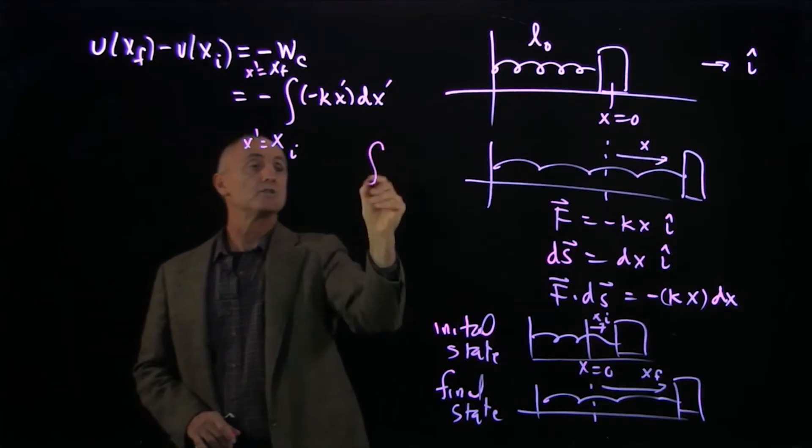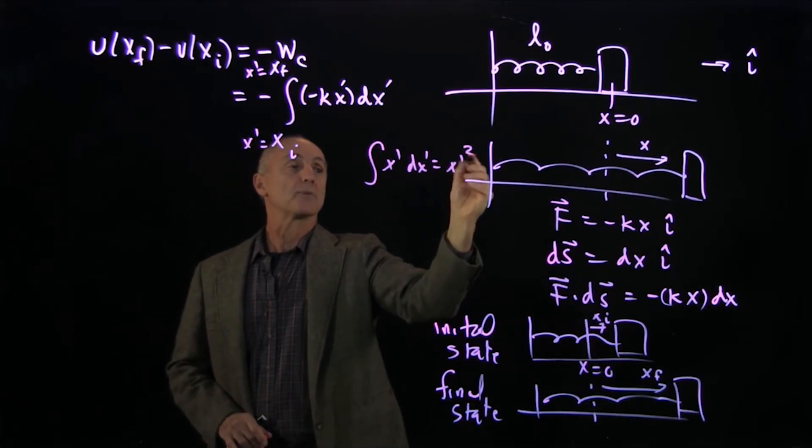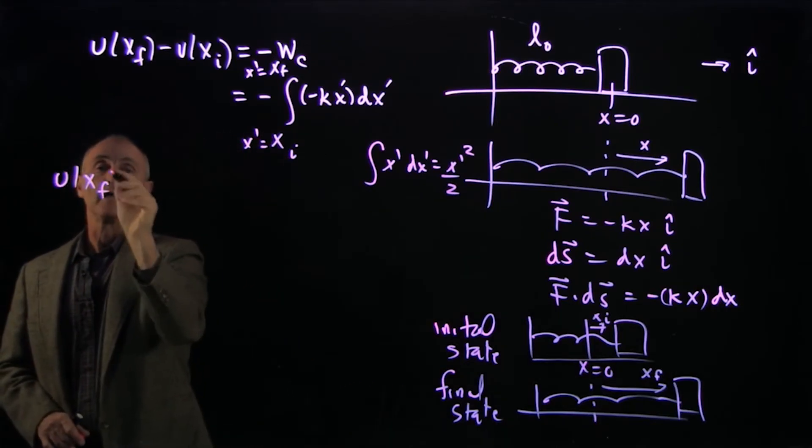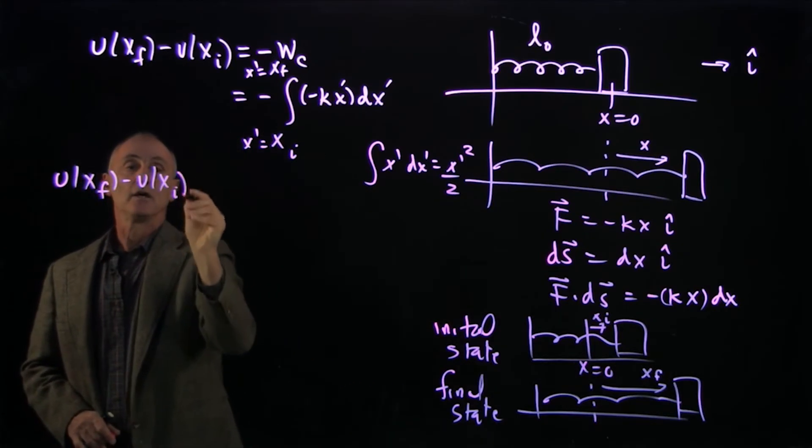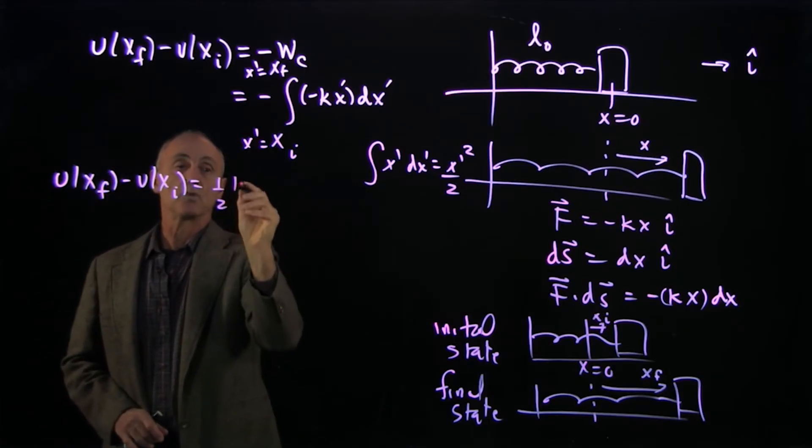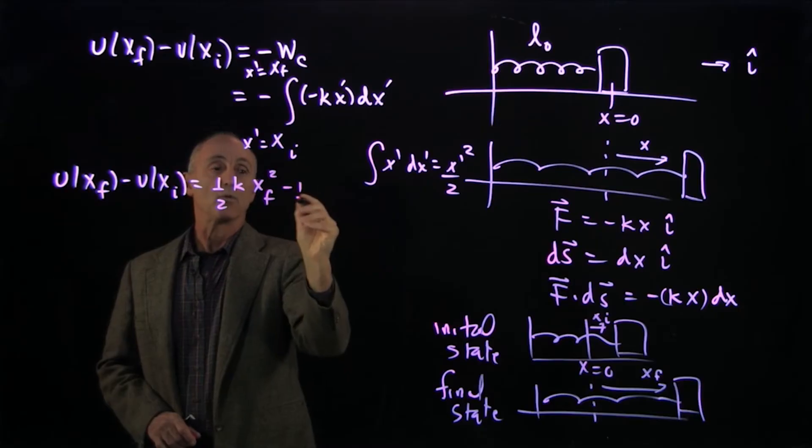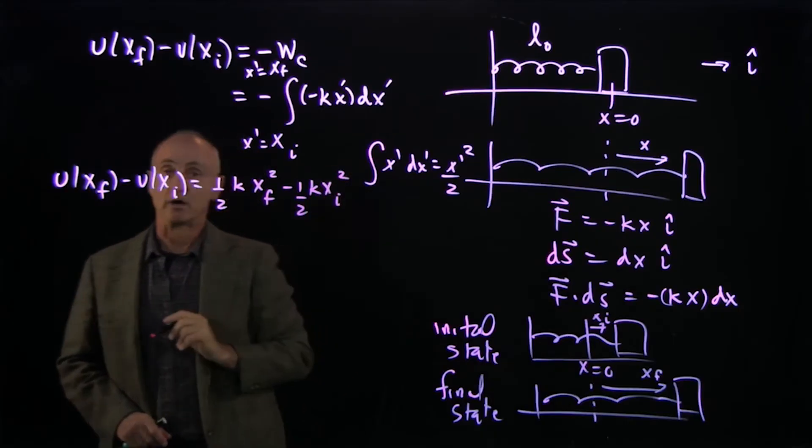And when you simply integrate x prime dx prime, you get x prime squared over 2. And so the change in potential energy between these two states is 1/2 k x final squared minus 1/2 k x initial squared.